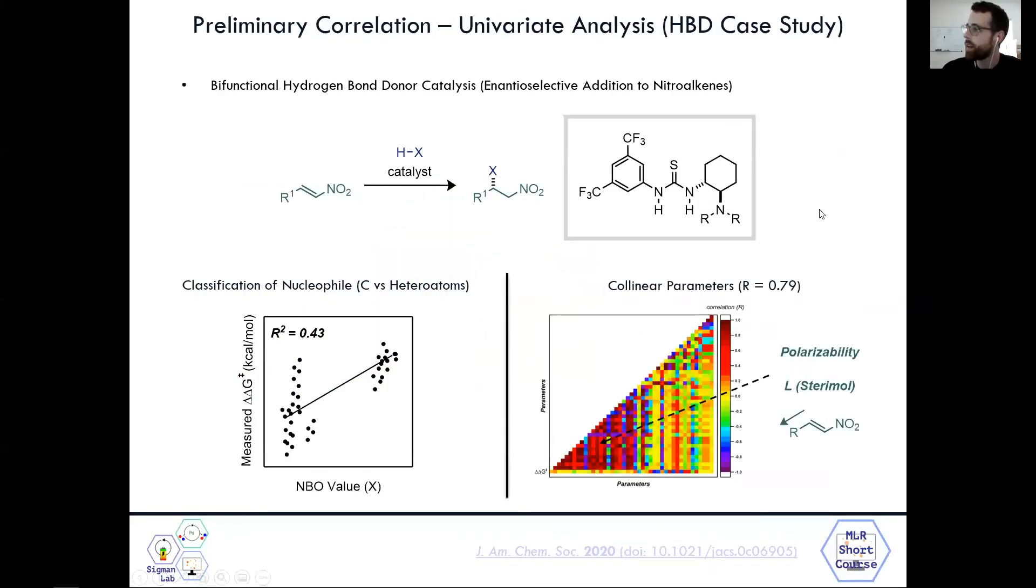So one case study that I will be referencing throughout this module in the next video is this study we published recently about bifunctional hydrogen bond donor catalysis, specifically the enantioselective addition to nitroalkenes. So for example, of a univariate analysis, looking at the nucleophile, we see the NBO value of X in comparison to the measured Delta Delta G is really just providing a classification of nucleophile, which in this case is carbon versus hetero atoms such as phosphorus and sulfur. So although it's not a really strong direct correlation, it gives us a sense of how that's operating in our model.